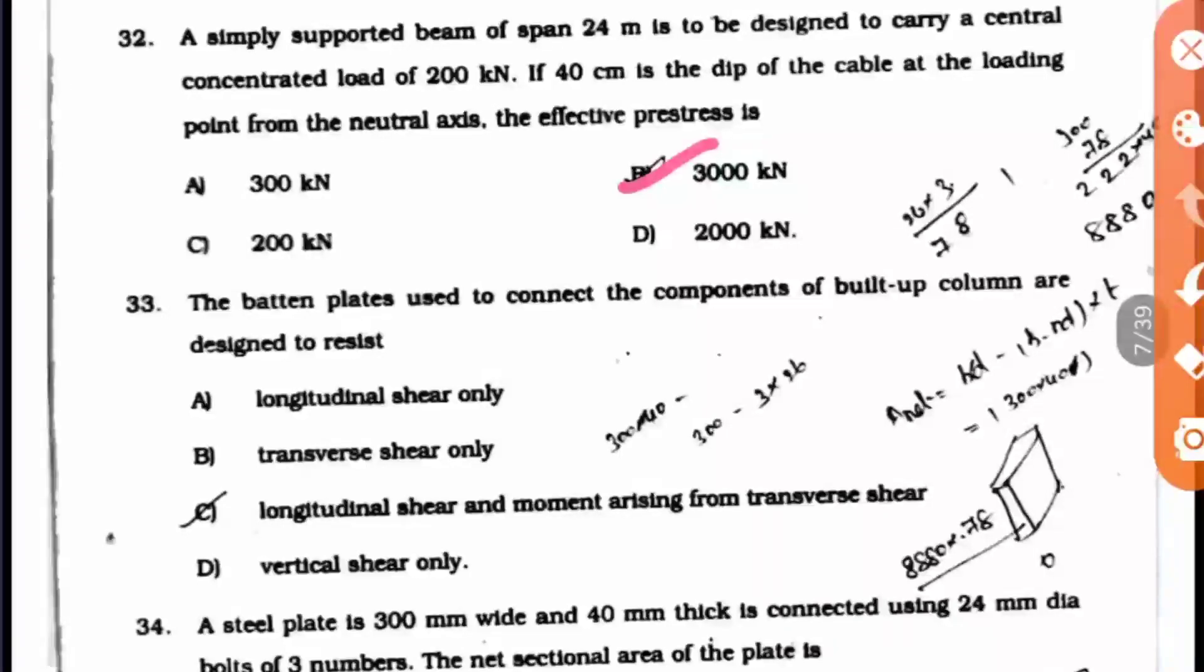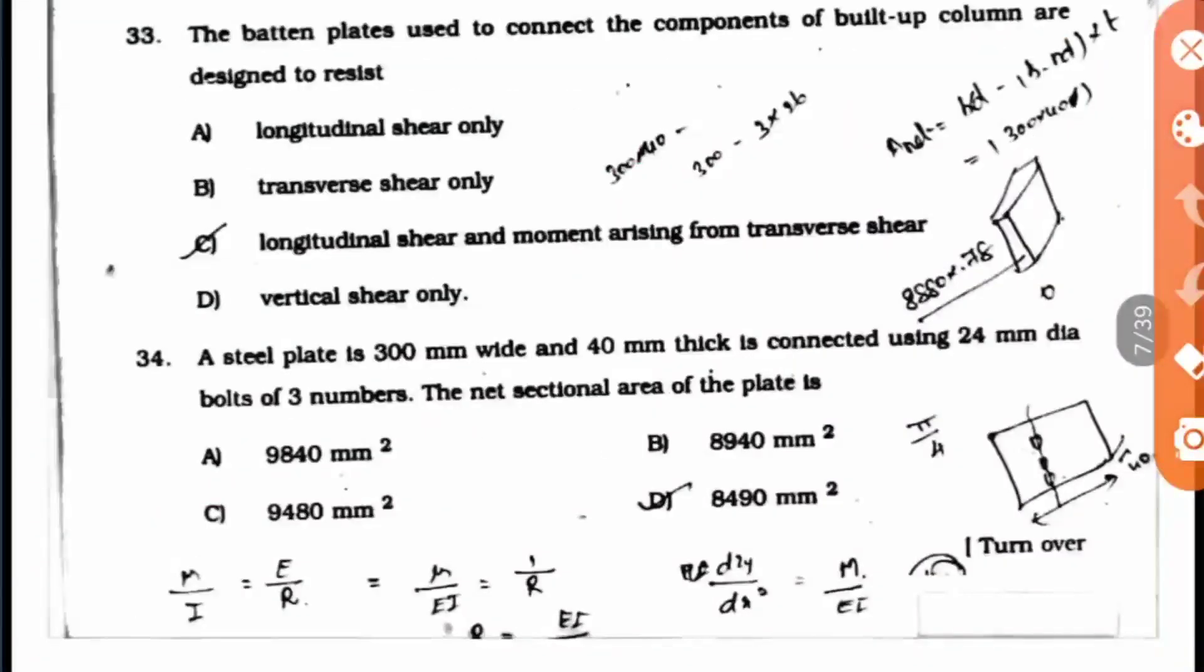Question 33: The batten plates used to connect the components of built-up columns are designed to resist both longitudinal shear and moment arising from transverse shear.